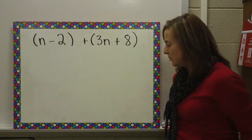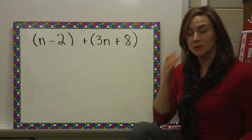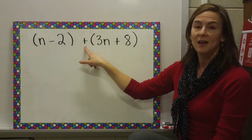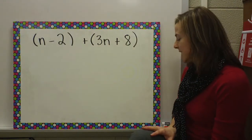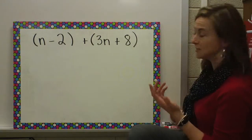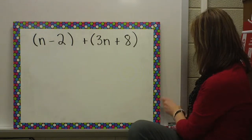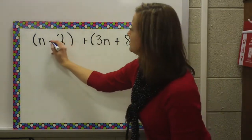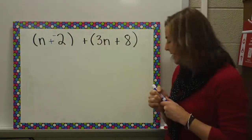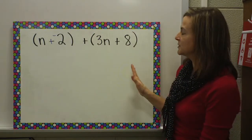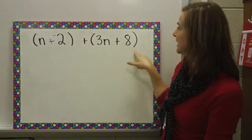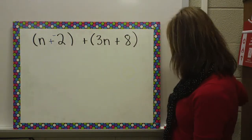In our first example, remember our goal is adding or subtracting expressions. We have two expressions here that we are adding. Step one says to change all subtraction to addition, so let's start there. I'm going to go in here — I have one subtraction, so I'm going to add the opposite. The next step says to reorder, so I want to make sure that my variable term is first and then my constant. In both of these cases, they are, so I don't have to worry about that.